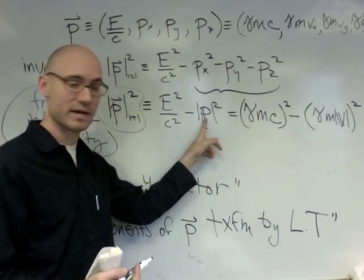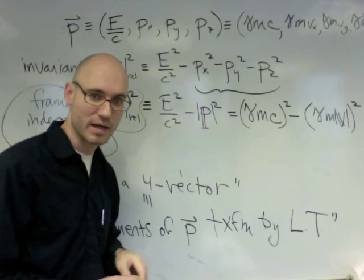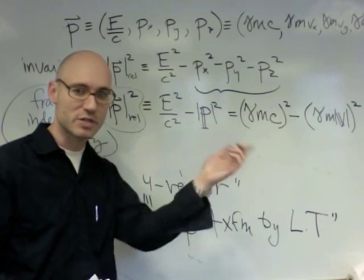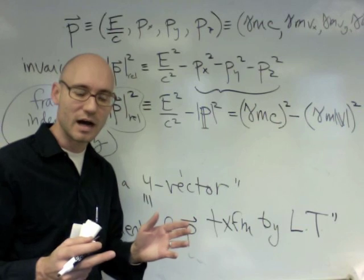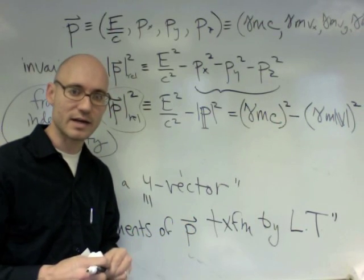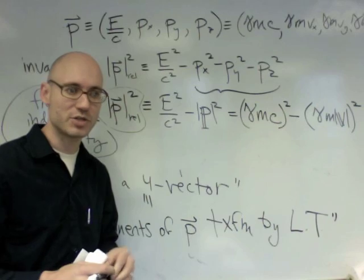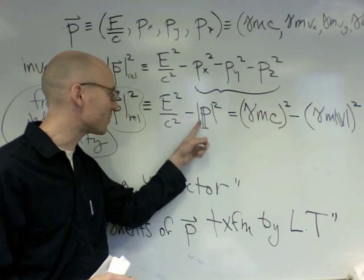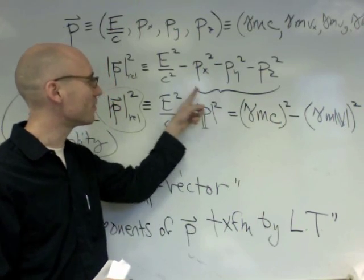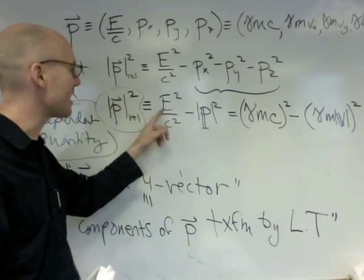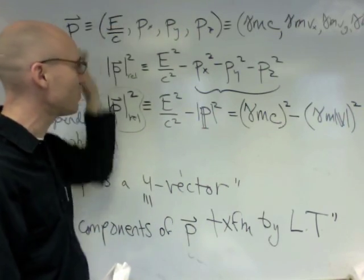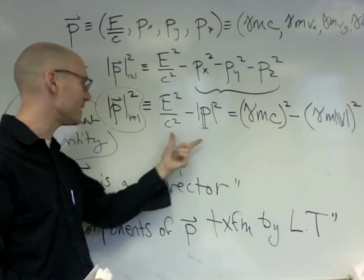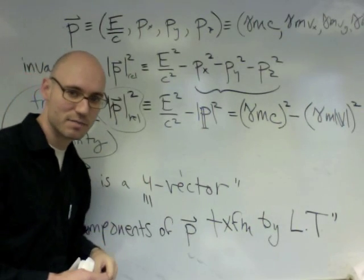It's a frame-dependent quantity. And E over C is also a frame-dependent quantity. Because, again, in the frame in which the bullet flies through, it has a lot of kinetic energy. And in the frame in which you're running alongside, it has no kinetic energy. And so both of these are frame-dependent objects. And the postulate is that if these are components of a four-vector, which transforms by Lorentz transformation, then this combination of them must be a frame-independent quantity.